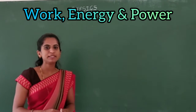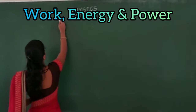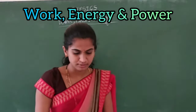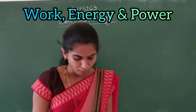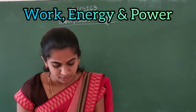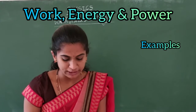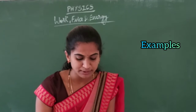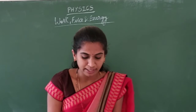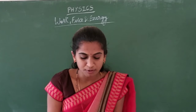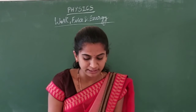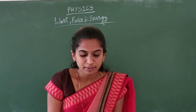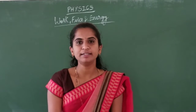Good morning, children. The third example problem, that is page number 26. A boy of mass 40 kg climbs up a flight of 30 steps, each of 20 cm height, in 2 minutes, and a girl of mass 30 kg does the same in 1.5 minutes. Compare the work done and the power developed by them.